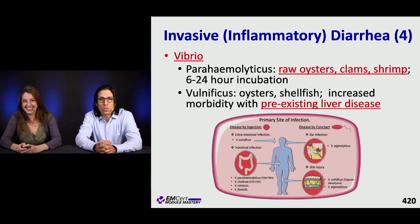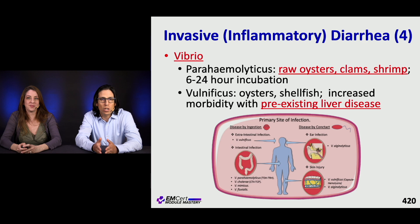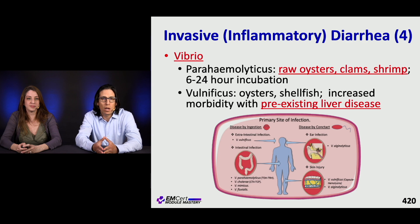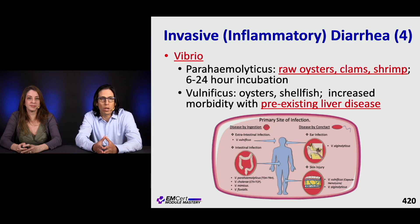Vibrio cholera is endemic to a number of areas in South Asia and elsewhere. Vibrio parahemolyticus you get from raw oysters, clams, or shrimp, and has a 6- to 24-hour incubation. Vibrio vulnificus can cause horrible sepsis, classically in a cirrhotic patient, and is associated with oysters, shellfish, or wounds from seawater or marine areas.